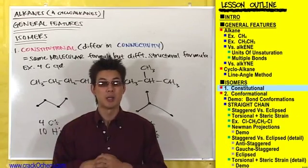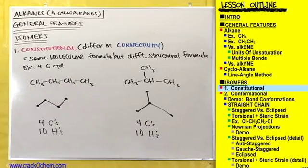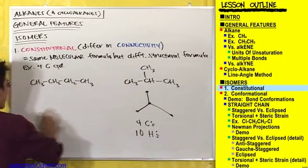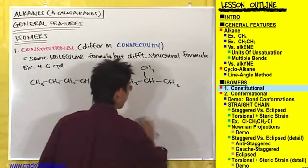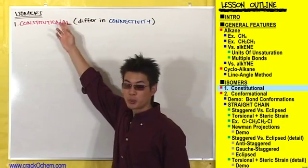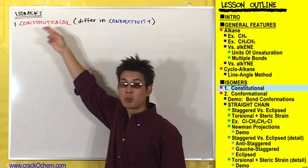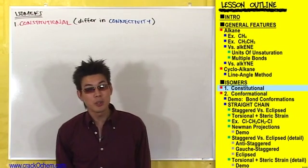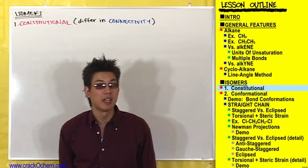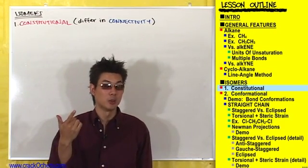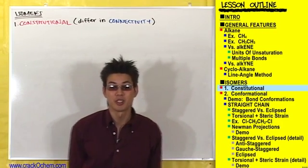Let's move on to the other two types of isomers. The first type we talked about were constitutional isomers, which differ in connectivity, and you probably saw that in G-chem. But the next two types of isomers are exclusive to O-chem: they are known as conformational and stereo isomers. Let's start off with conformational isomers first.